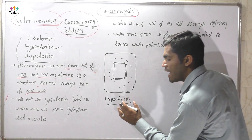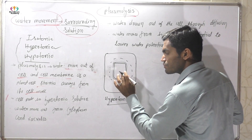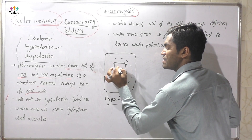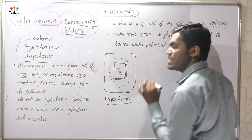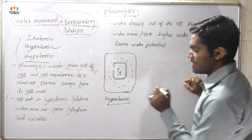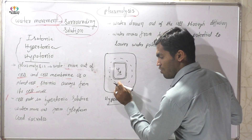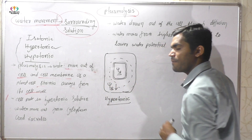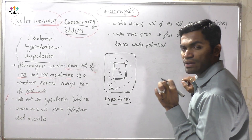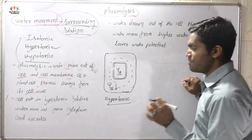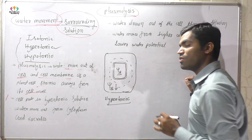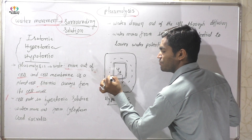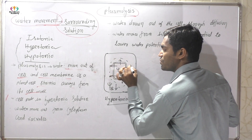But when the cell is put into a hypertonic solution, the concentration of water — that is, the water potential — is higher in the cytoplasm but lower in the hypertonic solution. Because of this gradient created between the cytoplasm and the outside solution, water comes out from the cell by exosmosis.